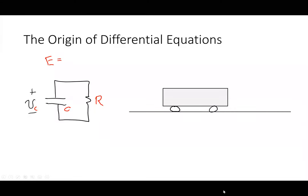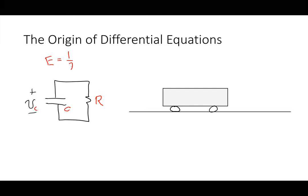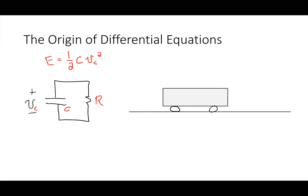It's one half CV squared, isn't it? Or am I remembering that correctly? You are remembering that correctly. Magically, any system that has energy storage always looks like that. You should have seen that before.